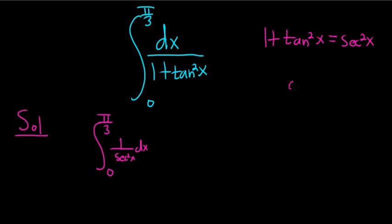Now cosine of x is 1 over secant. So 1 over secant squared is just cosine squared. This becomes the integral from 0 to pi over 3 of cosine squared x dx.